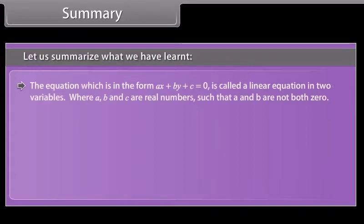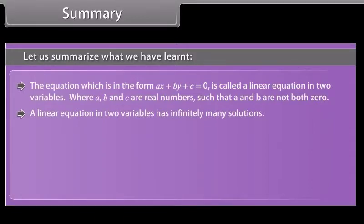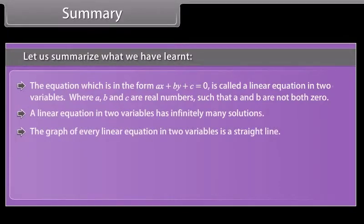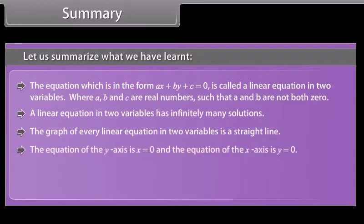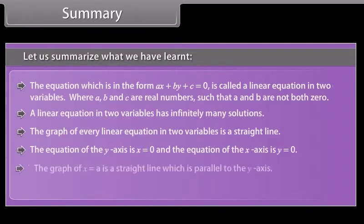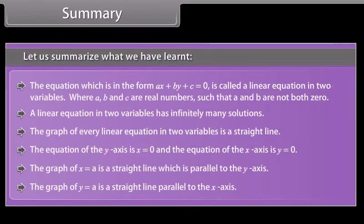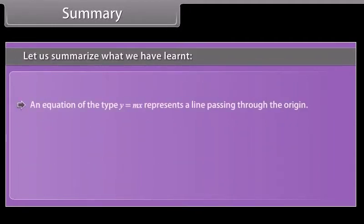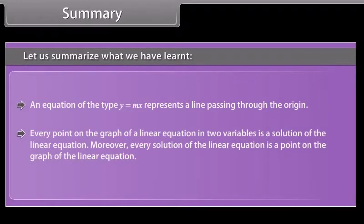Let us summarize what we have learned. The equation in the form AX plus BY plus C is equal to 0 is called a linear equation in two variables, where A, B, and C are real numbers such that A and B are not both zero. A linear equation in two variables has infinitely many solutions. The graph of every linear equation in two variables is a straight line. The equation of the y-axis is X is equal to 0, and the equation of the x-axis is Y is equal to 0. The graph of X is equal to a is a straight line parallel to the y-axis. The graph of Y is equal to a is a straight line parallel to the x-axis. An equation of the type Y is equal to mX represents a line passing through the origin. Every point on the graph of a linear equation in two variables is a solution of the linear equation.